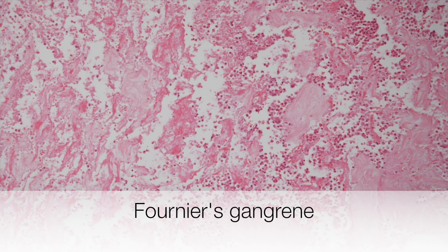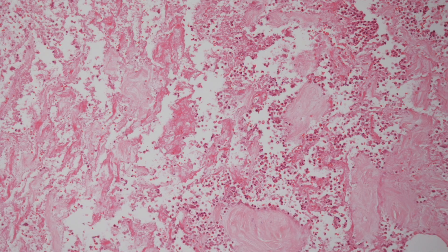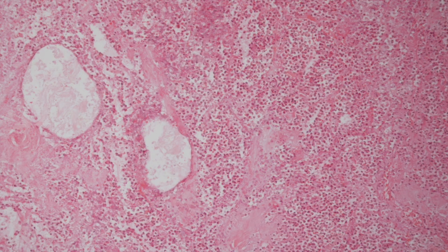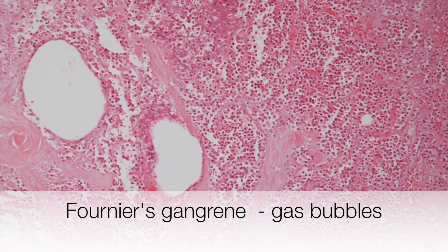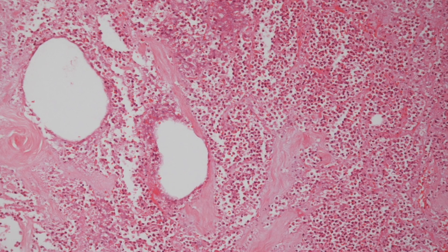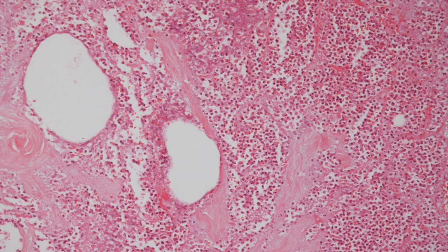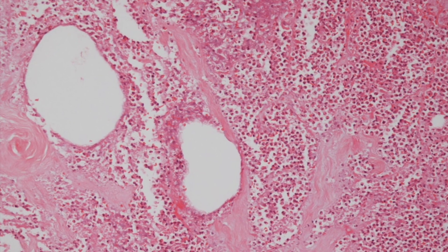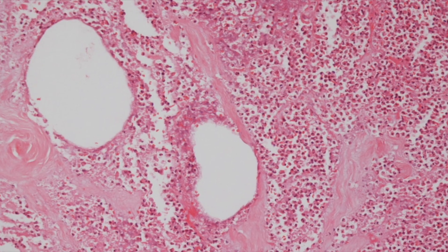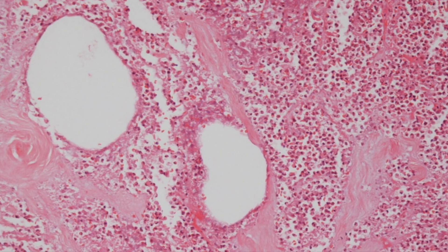Histological changes in Fournier's gangrene include abscesses, acute inflammation and necrosis. In this area of Fournier's gangrene, amongst the acute inflammatory cells there are large white empty spaces and these are gas bubbles.